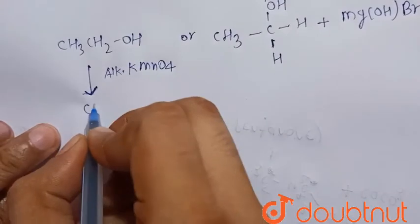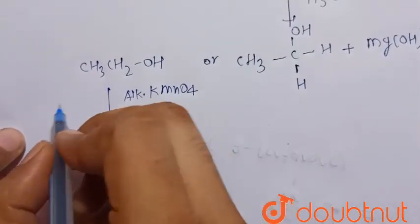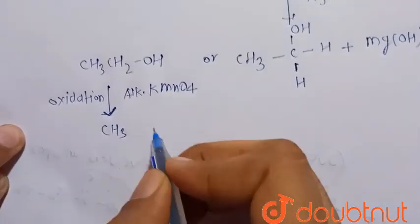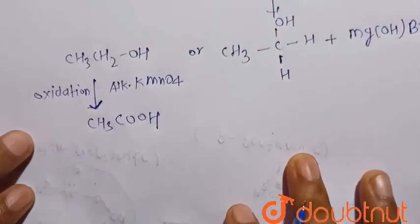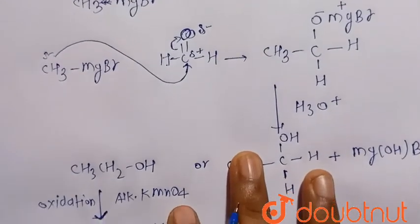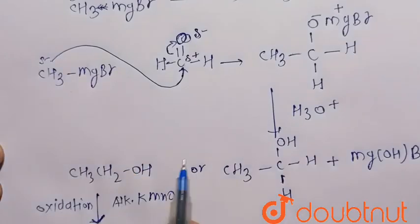This is oxidation because it is a highly oxidizing agent that directly oxidizes to acetic acid. In this way we can synthesize acetic acid from methyl magnesium bromide.